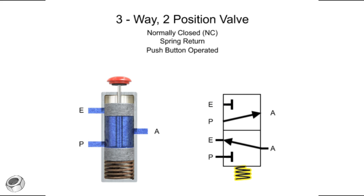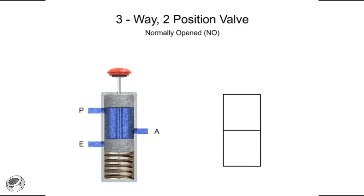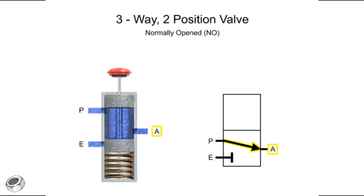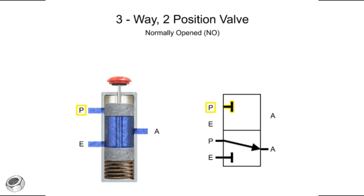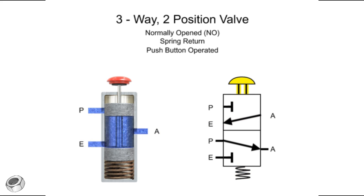The valve is also spring return and push button operated. Here is another three-way, two-position valve. It also has an inlet port P, exhaust port E, and output port A, but in a different configuration. In its normal position, exhaust port E is blocked and fluid flows from pressure port P to outlet port A. In the second position, pressure port P is blocked and fluid flows from outlet port A to exhaust port E. The valve is also spring return and push button operated.